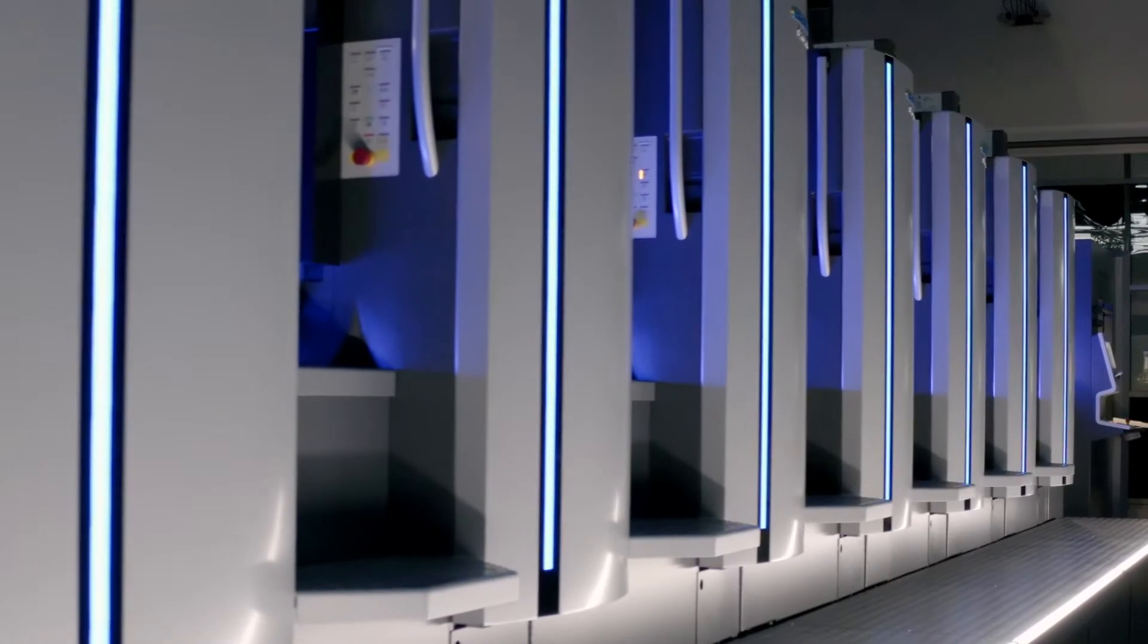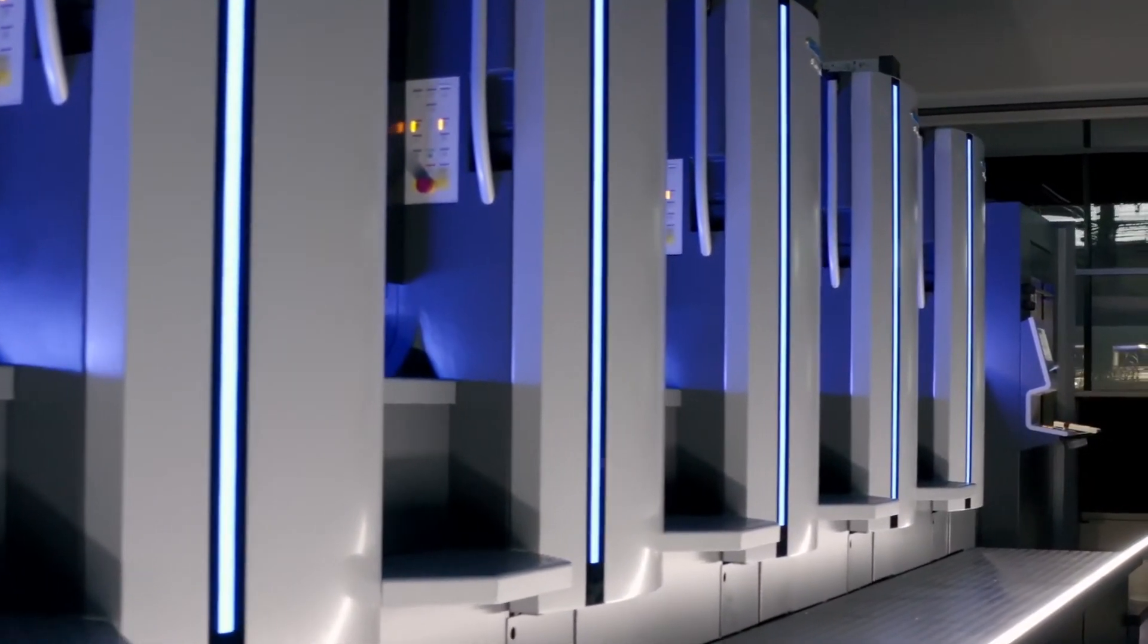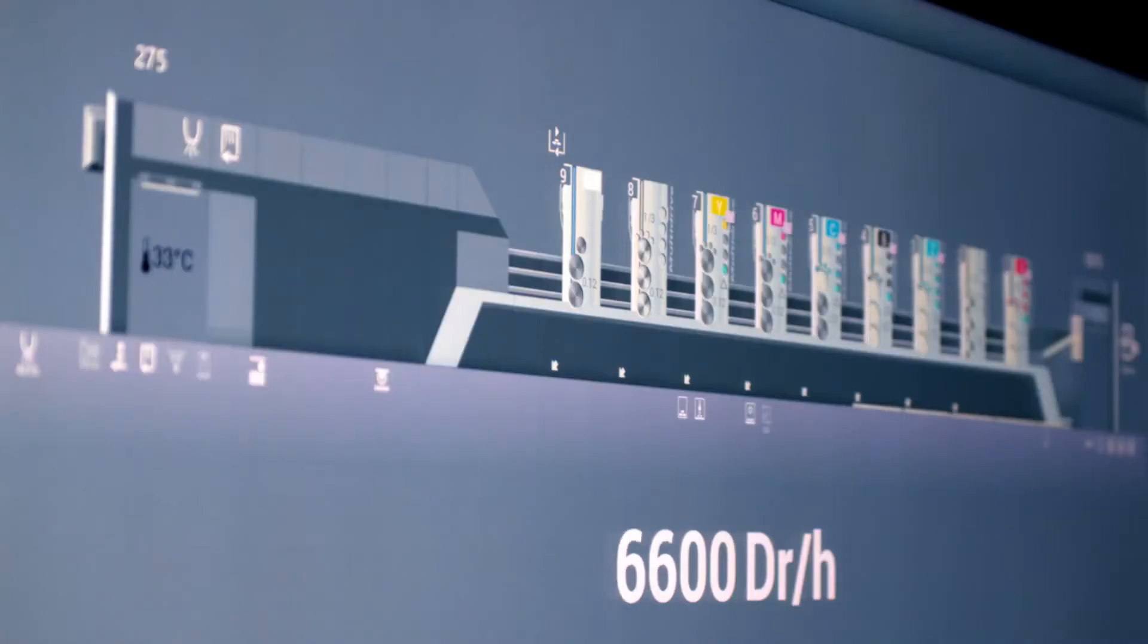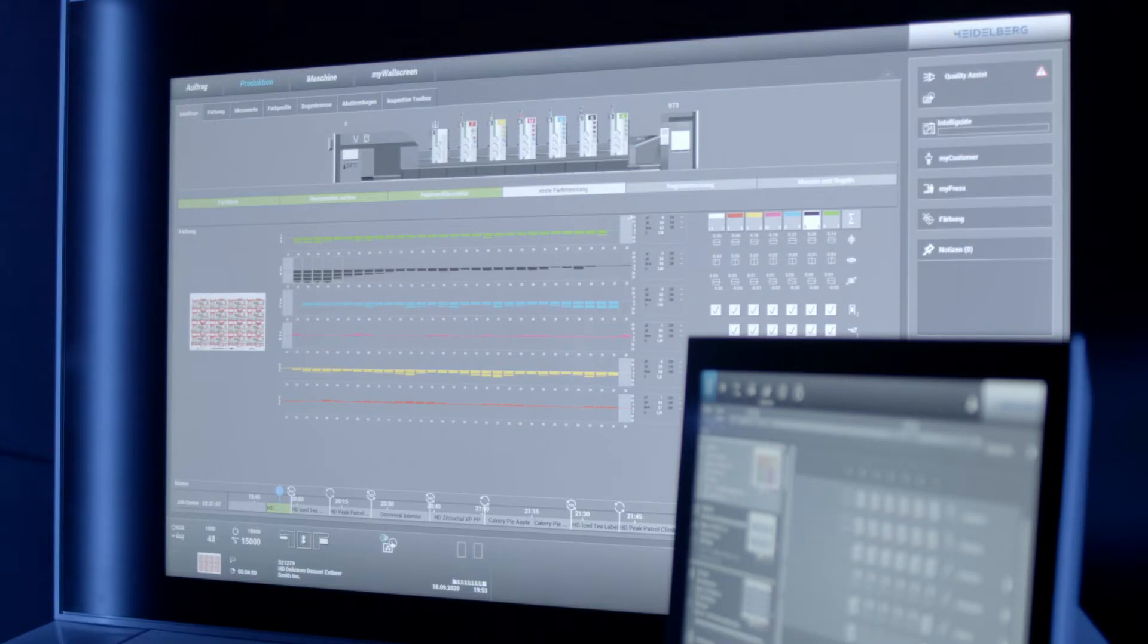Innovative solutions from the peak performance class are now available on all XL and CX presses. The Speedmaster CX 102 combines proven reliability with the new operating concept and is perfectly suited for packaging printing. The new operating concept is intuitive on the wallscreen. Excel, our smart navigation, guides the operator through the individual processes including make-ready and production.